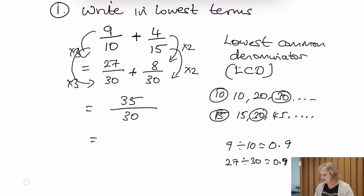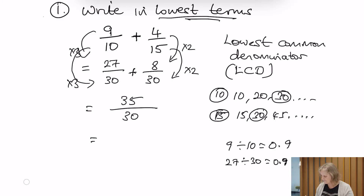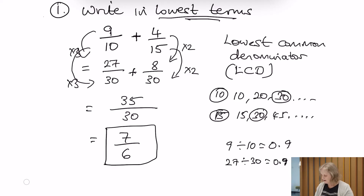The key thing here is that we want to write it in lowest terms. We can see that both the numerator and denominator can be divided by the highest common factor — which is 5. So we divide 35 by 5, which gives us 7, and 30 divided by 5 gives us 6. So our answer, which I'll highlight, is 7 over 6.